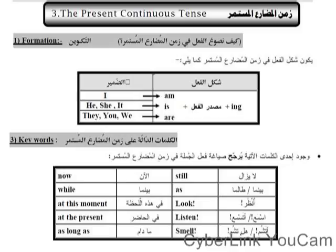It is formed from: I am, is, are + the verb with -ing. For example: I am playing. He, she, it is playing. They, you, we are playing.